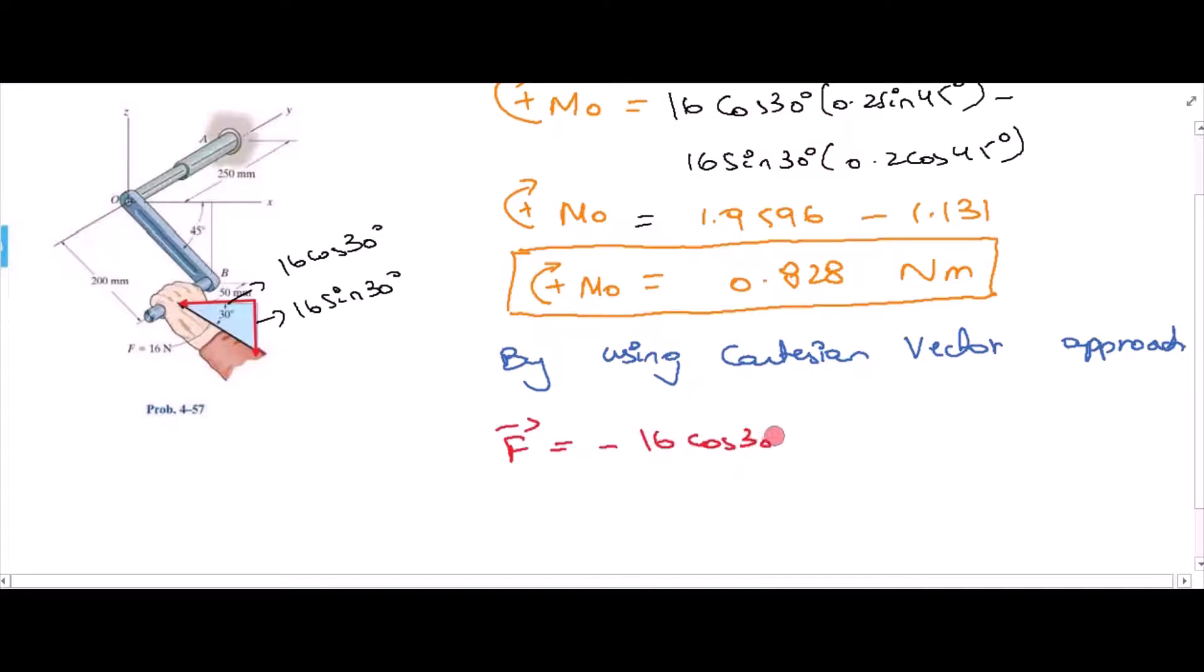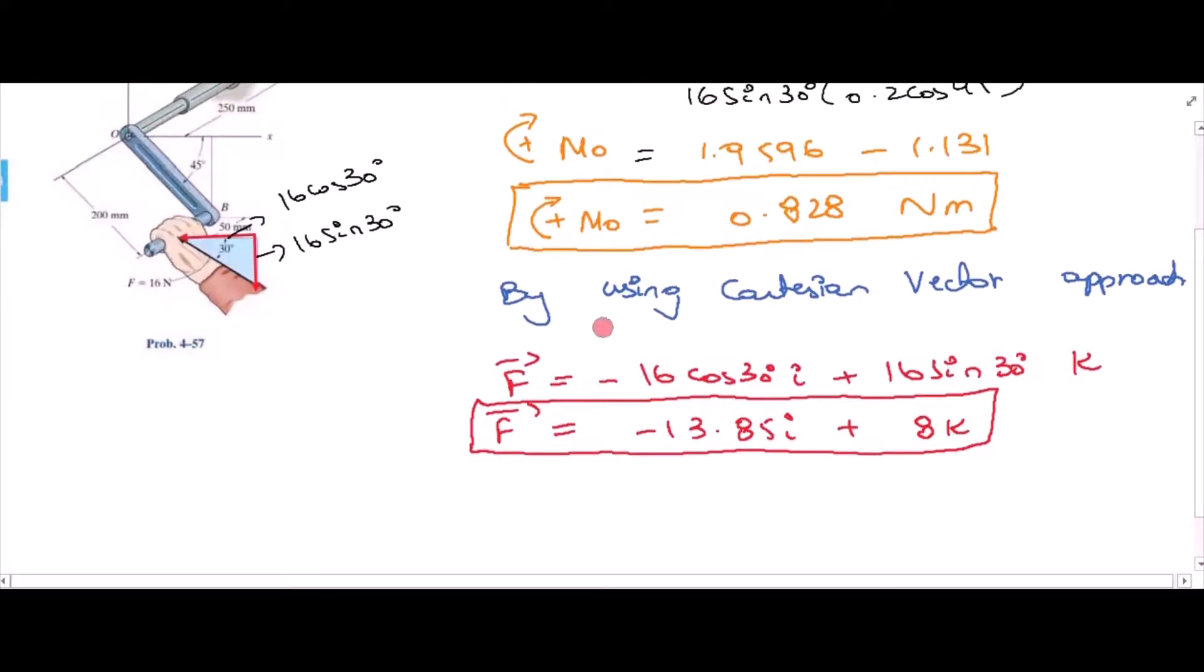This is 16 sin 30 and this component is 16 cos 30. So the force vector can be written as negative 16 cos 30 i plus 16 sin 30 k. Negative is because it is directed in the negative sense of positive x-axis. So our force vector F is negative 13.85 i plus 8 k. We have resolved the force in vector form. Now we have to find the moment arm, so our moment arm is between point O and point B. We have to find the coordinates. Coordinates of point O are 0, 0, 0 meters.